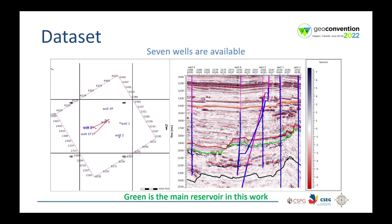The data set is composed by seven wells, shown in the map on the left-hand side. Some of them are not vertical, as you can see by the well paths in red. On the right-hand side, we can see the wells plotted against the seismic and horizons. The green horizon defines the main reservoir in this work.